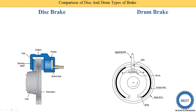Here you can see the diagram of a disc brake. In a disc brake, we use a disc and it is mounted with the wheel hub. On the other side, a drum is used and inside the drum there are various mechanisms, so it is called a drum brake.